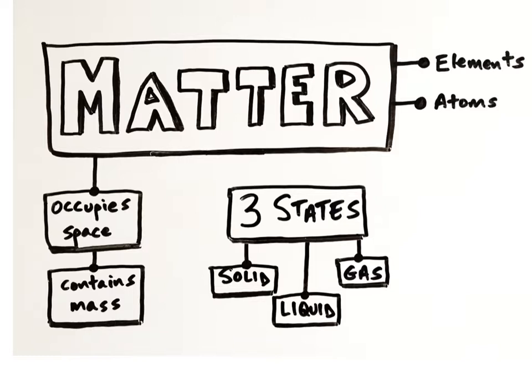Regardless of which state matter is in, all matter is built from chemical elements. And each element is made of atoms. Think of atoms as the essential building blocks of matter, like the individual bricks that are used to build a wall. An element is a chemical substance that cannot be broken down into a simpler substance using ordinary chemical means. There are currently 118 chemical elements recognized by scientists, with 92 of them naturally occurring on Earth.